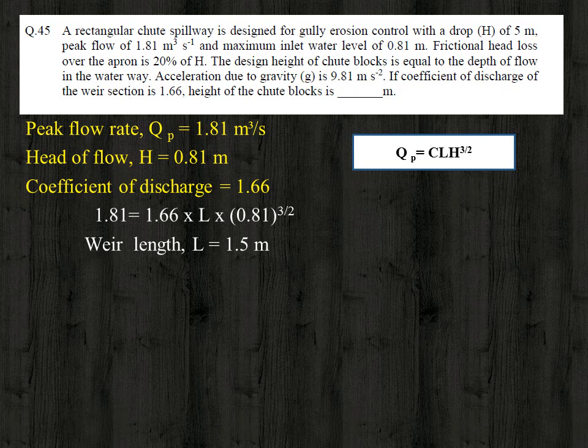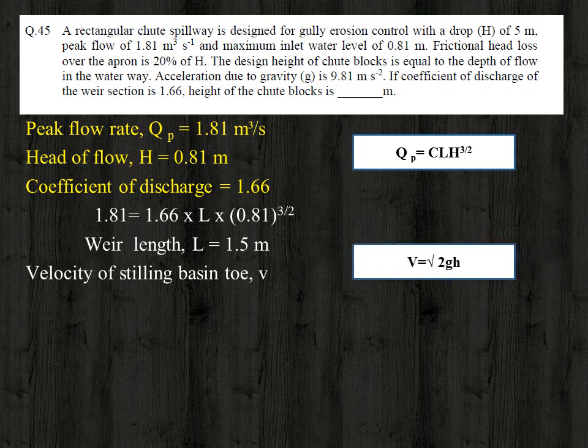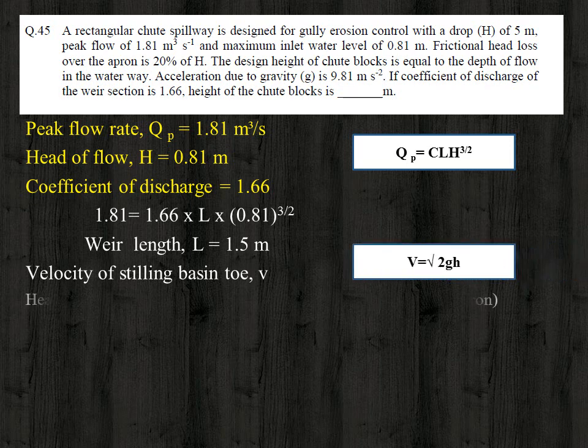Now we need to find the velocity at the toe of the stilling basin using the formula v = √(2gh), where h is the head loss at the toe.